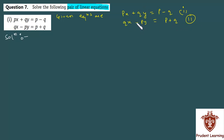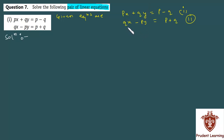Now, you can see these two equations will be easy to solve using the elimination method. The signs of y in the two equations are opposite. If we equate the coefficients of y, then y will eliminate and we will easily get x.